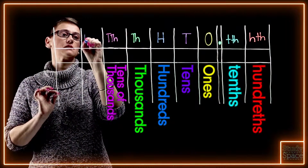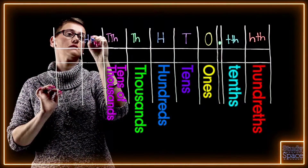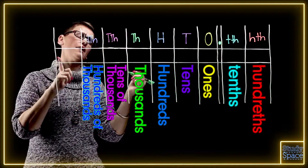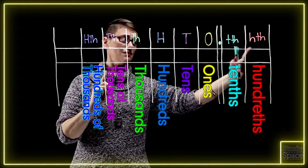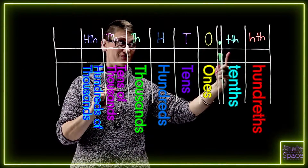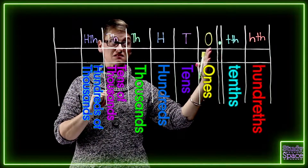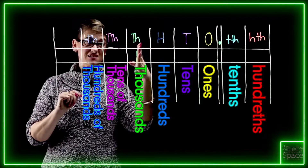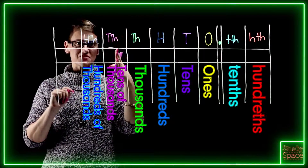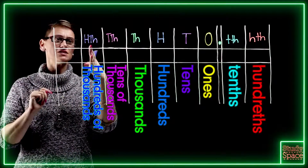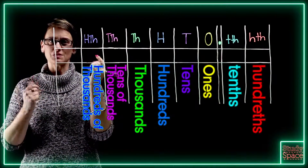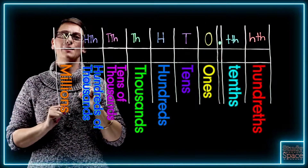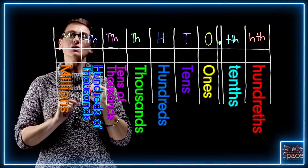Then we've got tens of thousands, and hundreds of thousands. Let's go back and check. So we've got: hundredths, tenths, a decimal place, ones, tens, hundreds, thousands, tens of thousands, hundreds of thousands. The next one must be millions, boys and girls — we'll do that with a capital M. Let's go look at some examples.